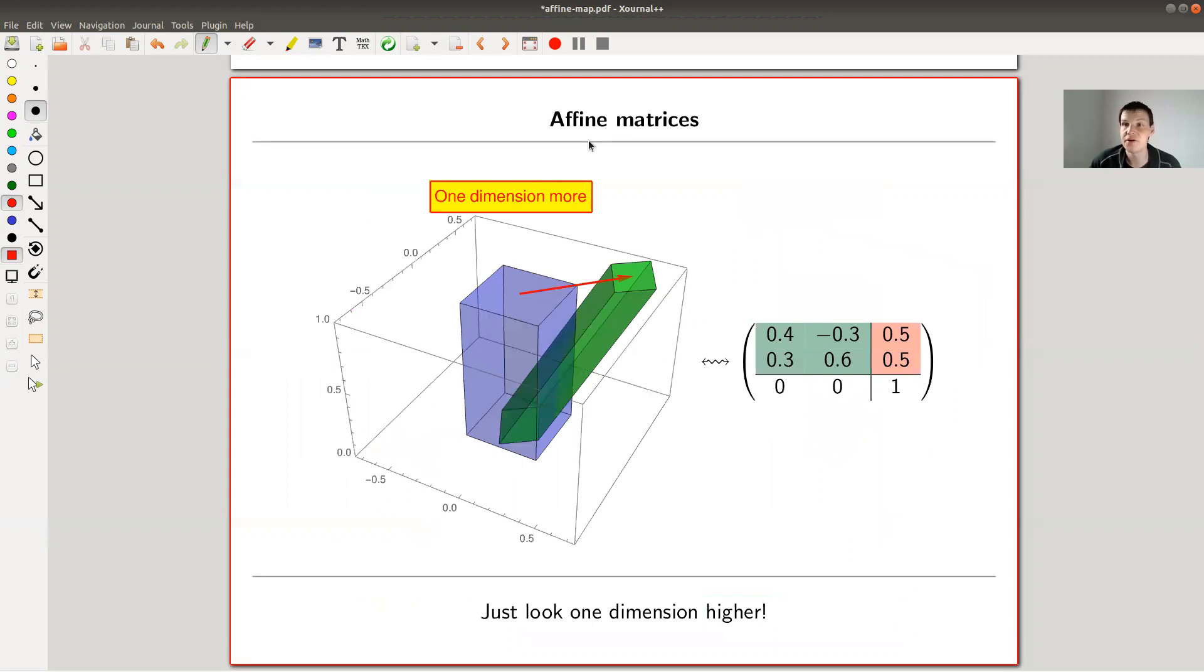So whenever you have an affine operation, you can actually assign to it a matrix. You just need one dimension more. You just need one more row and one more column. And this is how it works. So you have some linear type operation that you put in the upper left box. And this is the operation you see here. So in this case, you take this rectangle here at the top. And it's translated. So the translating operation is the red operation that you put here. So it's translated a half and a half in the uppermost plane. And this is roughly this direction of the red arrow. So this is this translation.